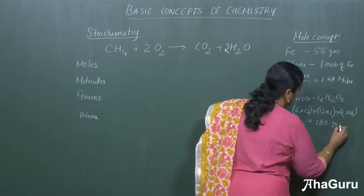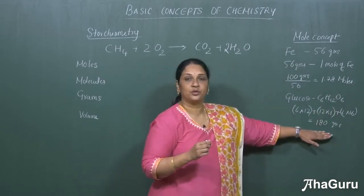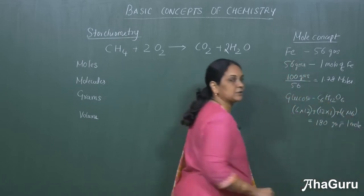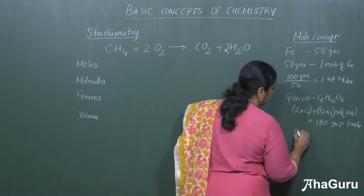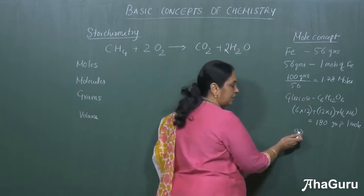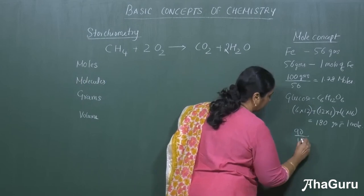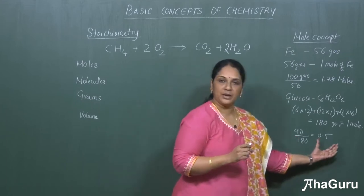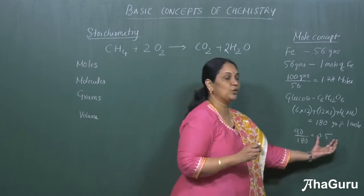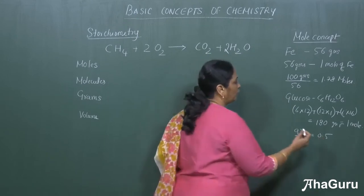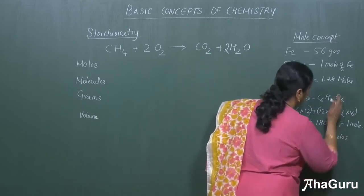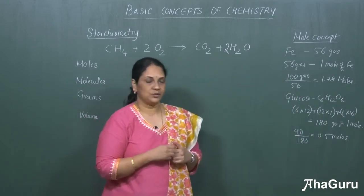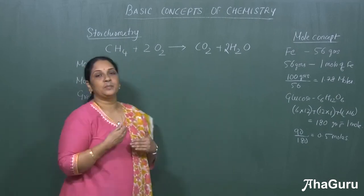So 180 grams of glucose is equal to 1 mole of glucose. Suppose I give you 90 grams — as before, given weight divided by molecular weight: 90 divided by 180 = 0.5. So 90 grams means you have given me 0.5 moles of glucose. This is the mole concept — we always express any compound or element in moles.